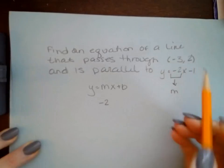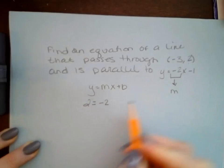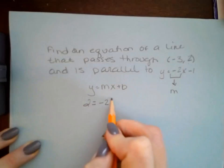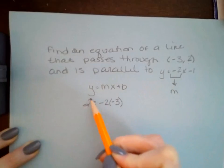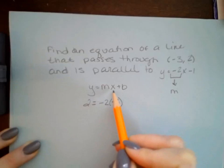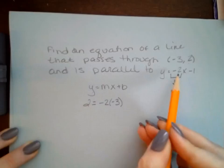So our y value is 2, and our x value is -3. See how I just substituted the 2 in for the y value and -3 in for the x value, and that came directly from the point.